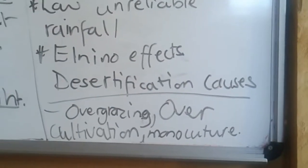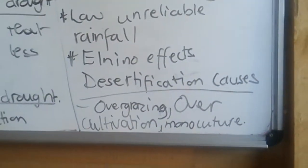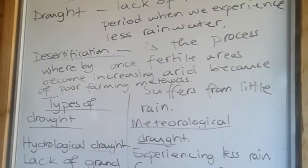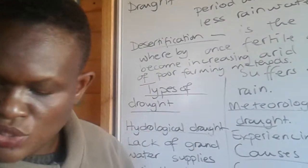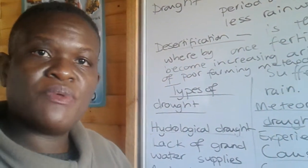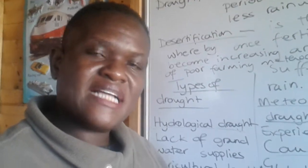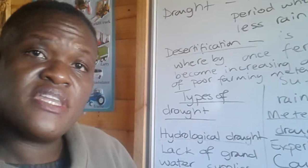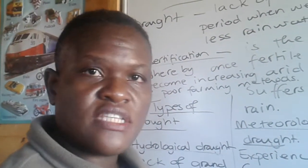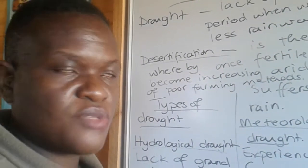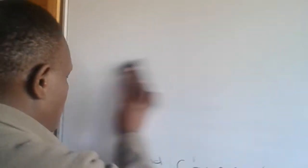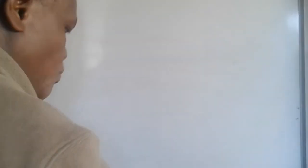The growing of one crop year after year means that same crop is using the same minerals within the soil, and this leads to soil infertility. Deforestation is when we cut down trees, and cutting down trees exposes the surfaces to soil erosion. The more soil erosion that takes place, the greater the lack of soil fertility, and it promotes the spread of the desert.